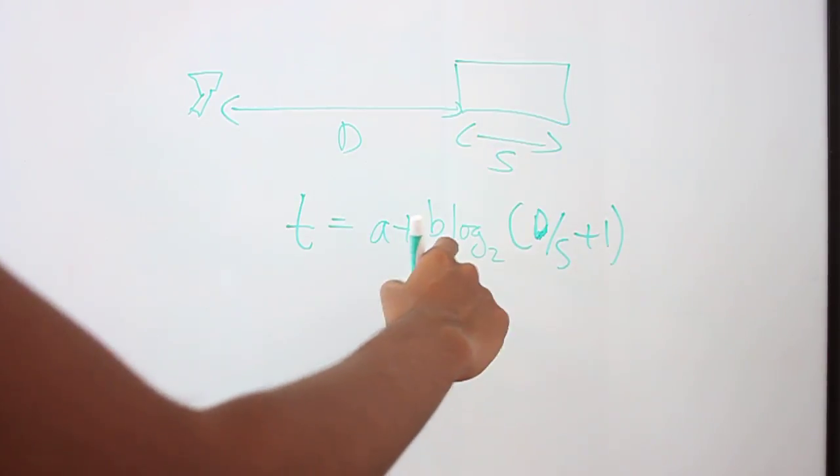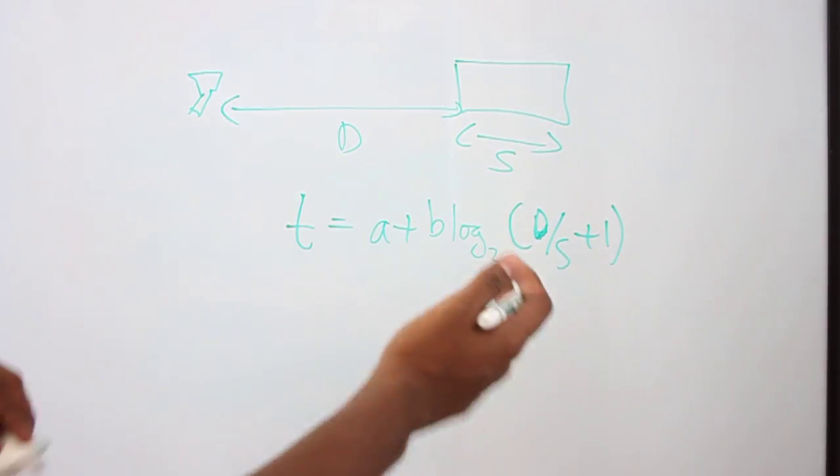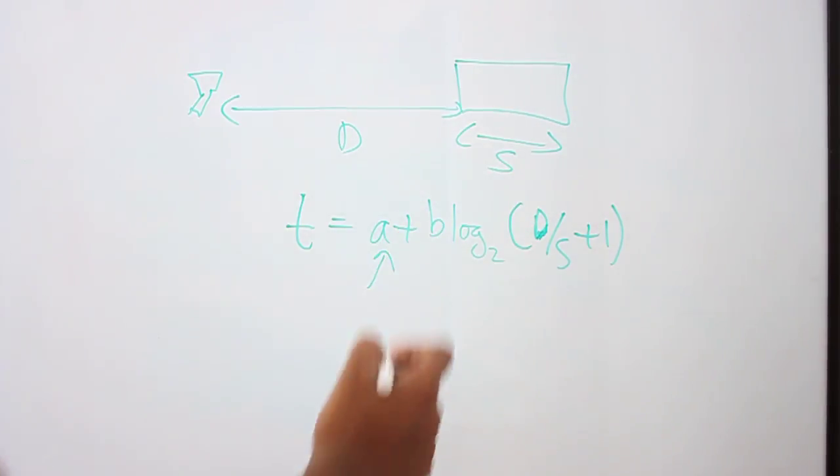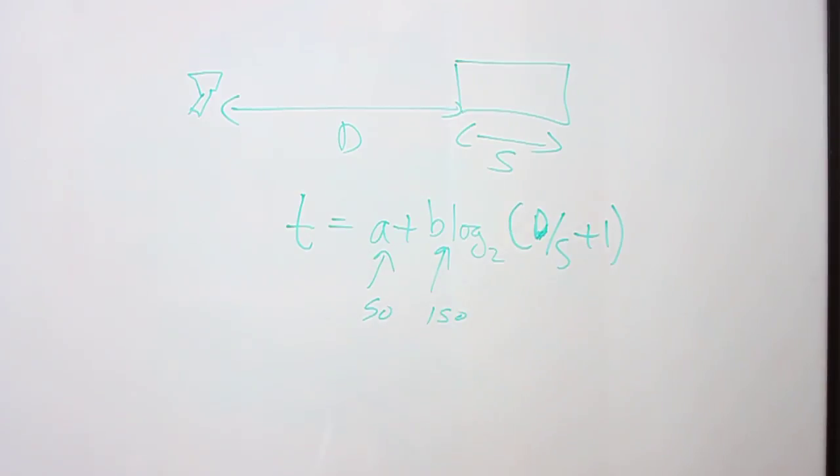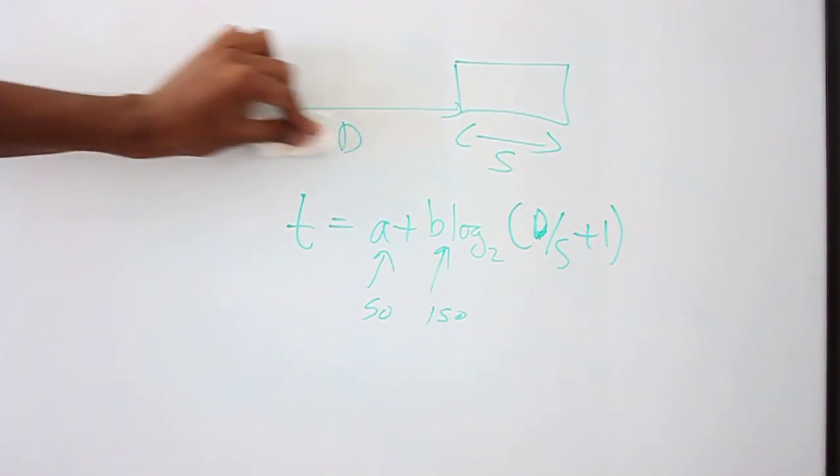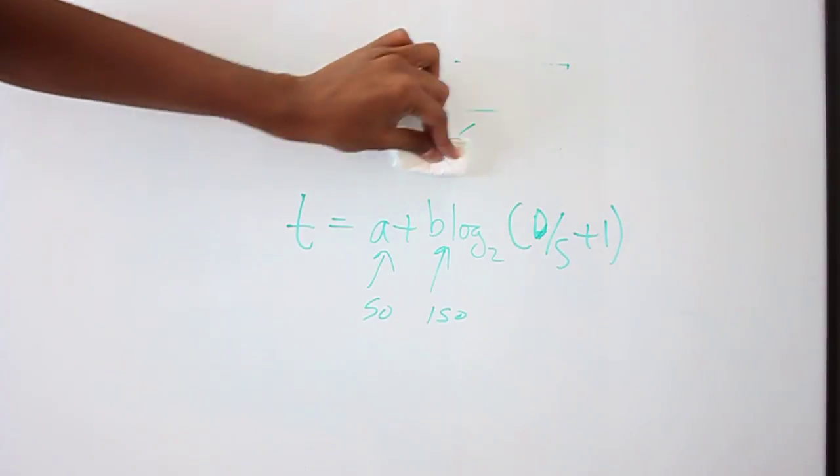You don't really have to worry about A and B, but they're experimentally determined values. And in this case, we'll just say that A equals 50 and B equals 150. And you really don't have to worry about these, because they're experimentally determined values. So let's see an application of this.